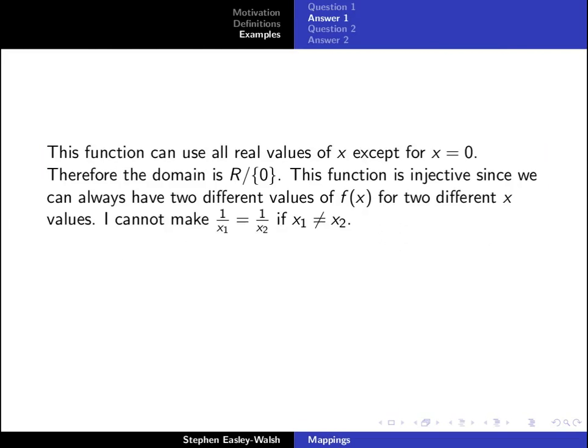I cannot make one over x1 equal to one over x2 if x1 and x2 are different because one over x1 equal to one over x2 by cross multiplying gives x2 equals x1 but x1 and x2 are supposed to be different.